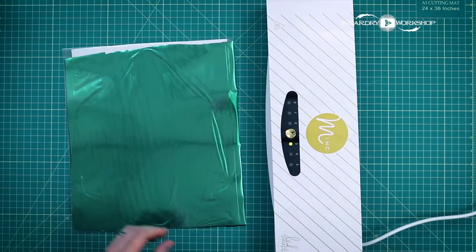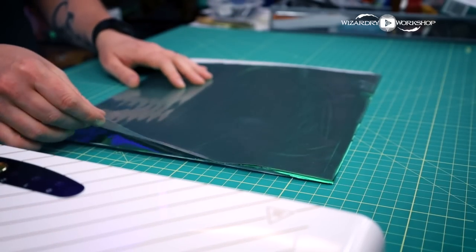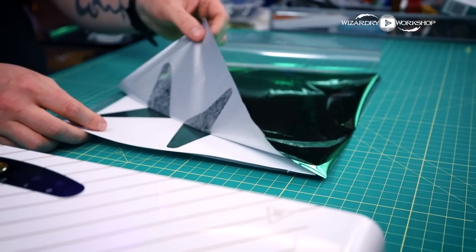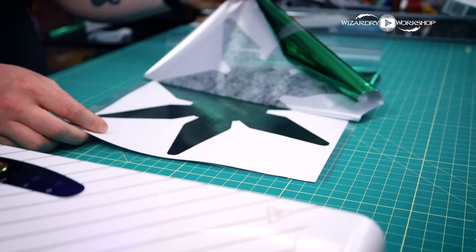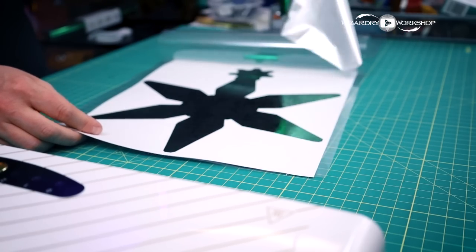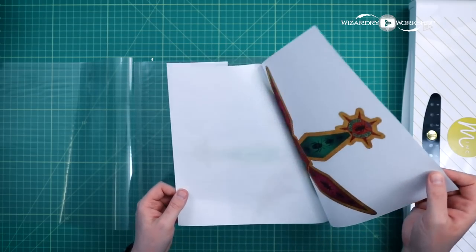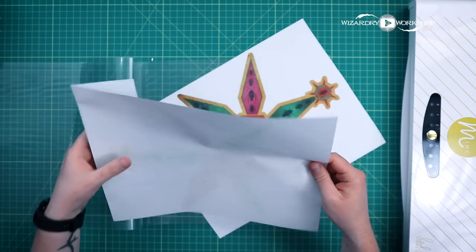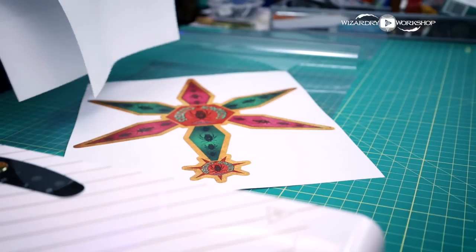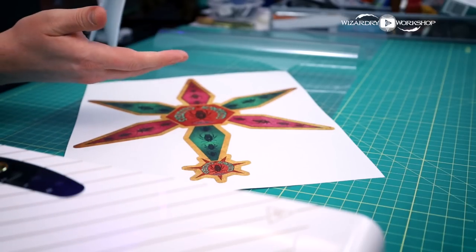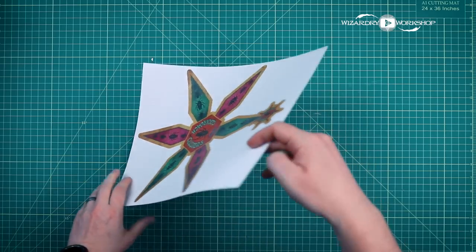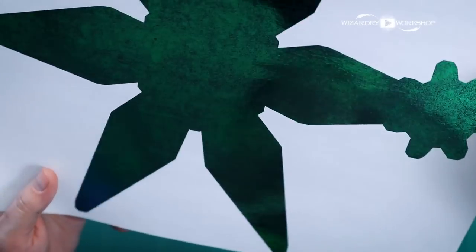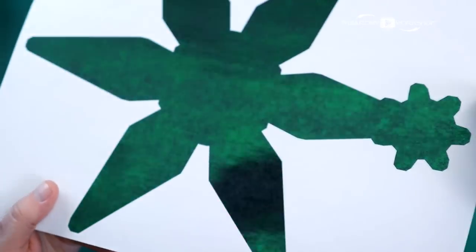And there we go. And let's see how this looks. See, a little bit of that still came off on that paper because it got heated up. I wonder what material I could use to prevent that from happening. And now we have the green foil on this side, which looks pretty cool.